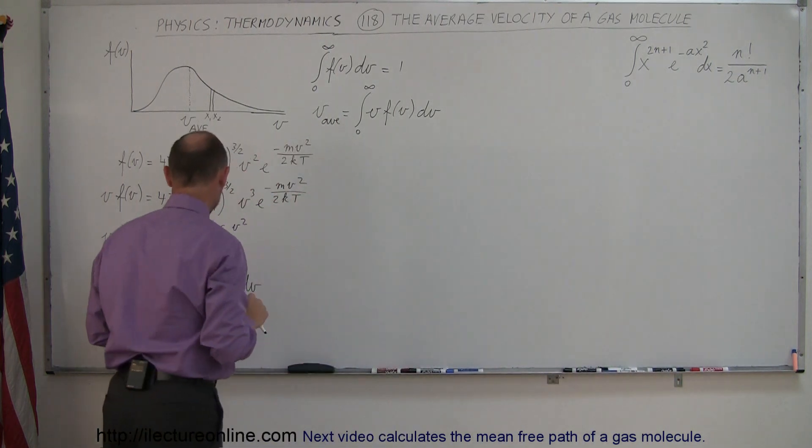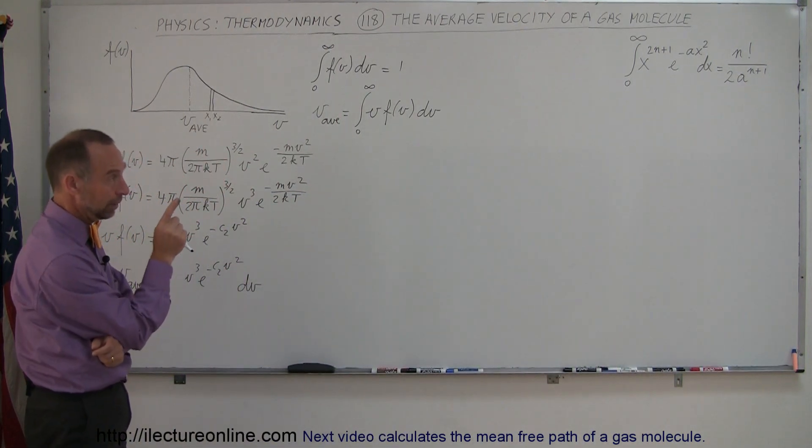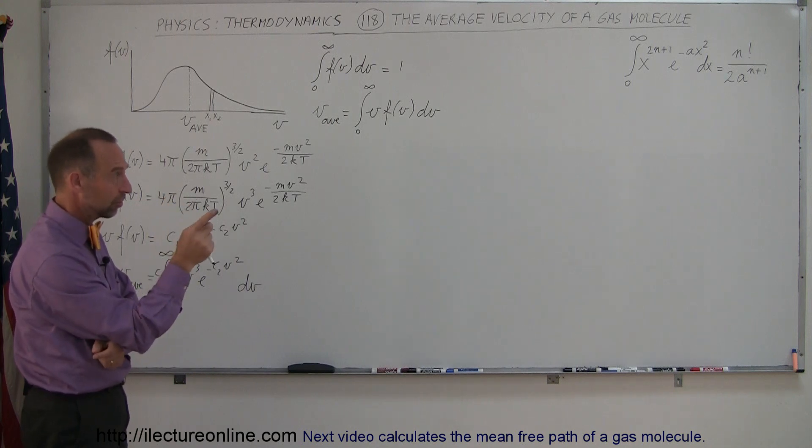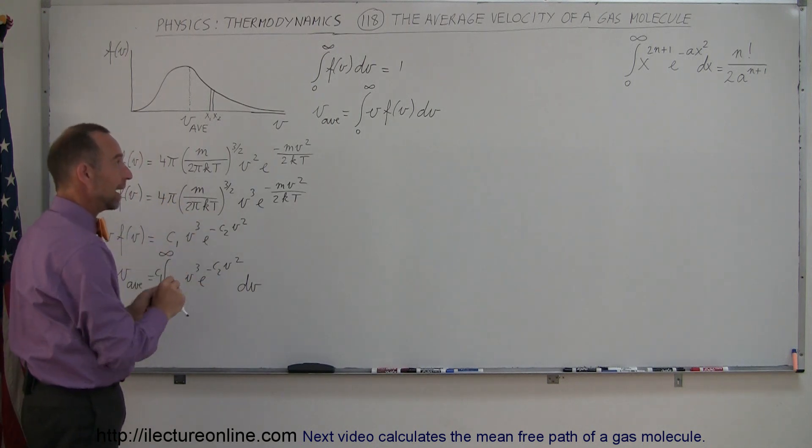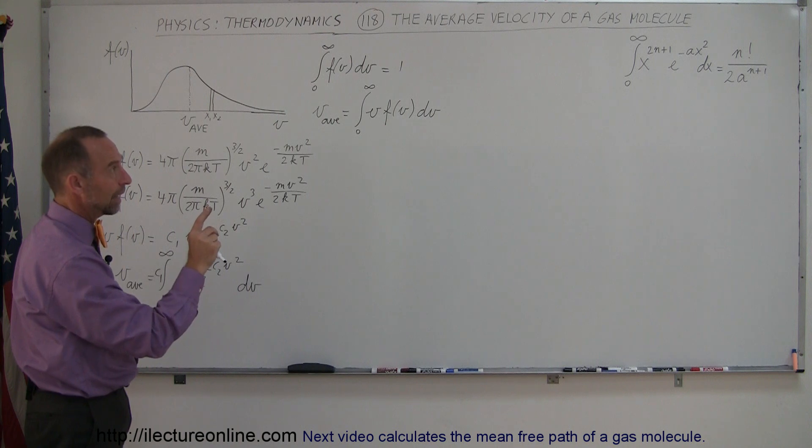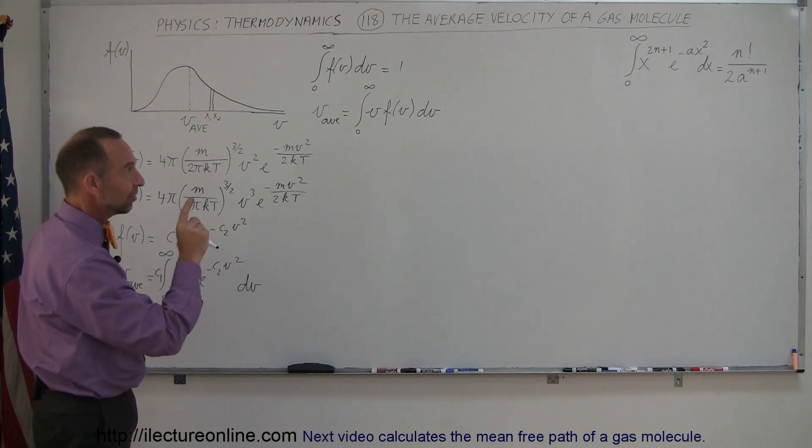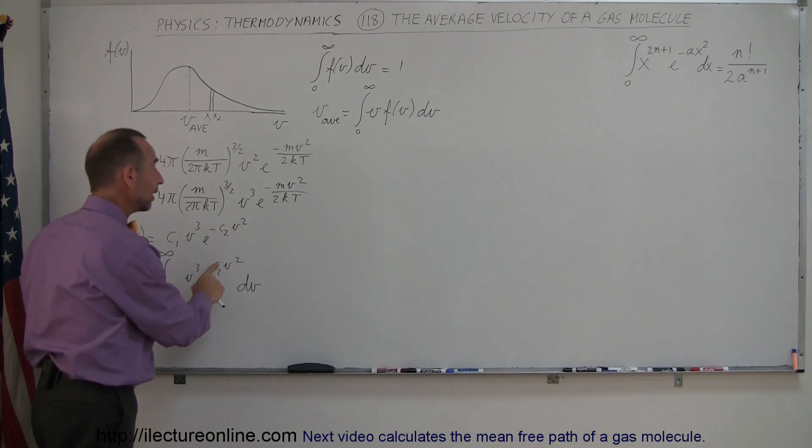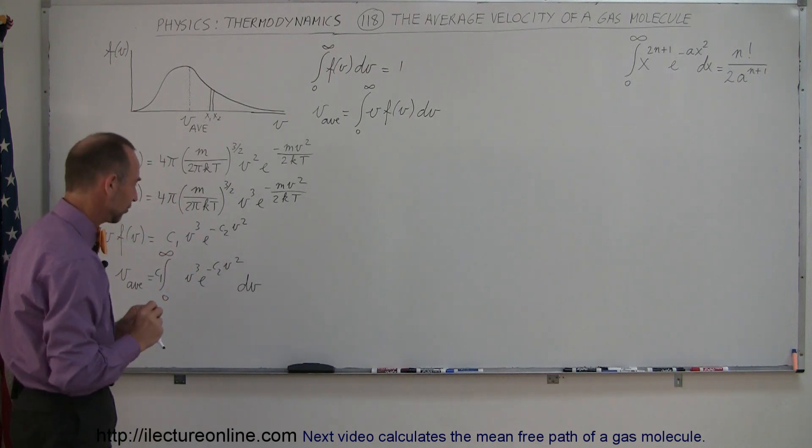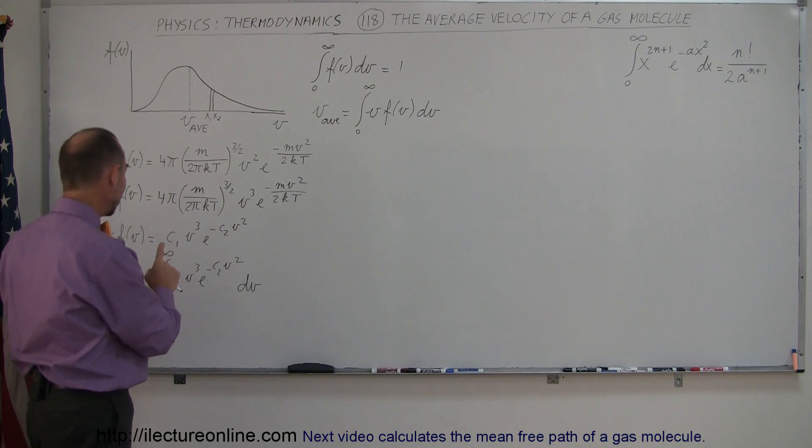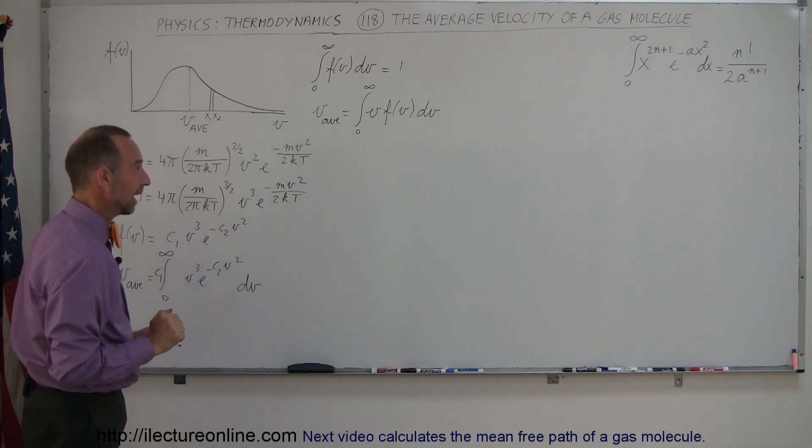Is there a similarity? Well, if N is equal to 1, 2 times 1 plus 1 is 3, V cubed, that matches. And so we have minus AX squared. Now of course, instead of the A we have a C, and X squared is V squared, a perfect match to this equation, so that means I can integrate that and make it look just like that.